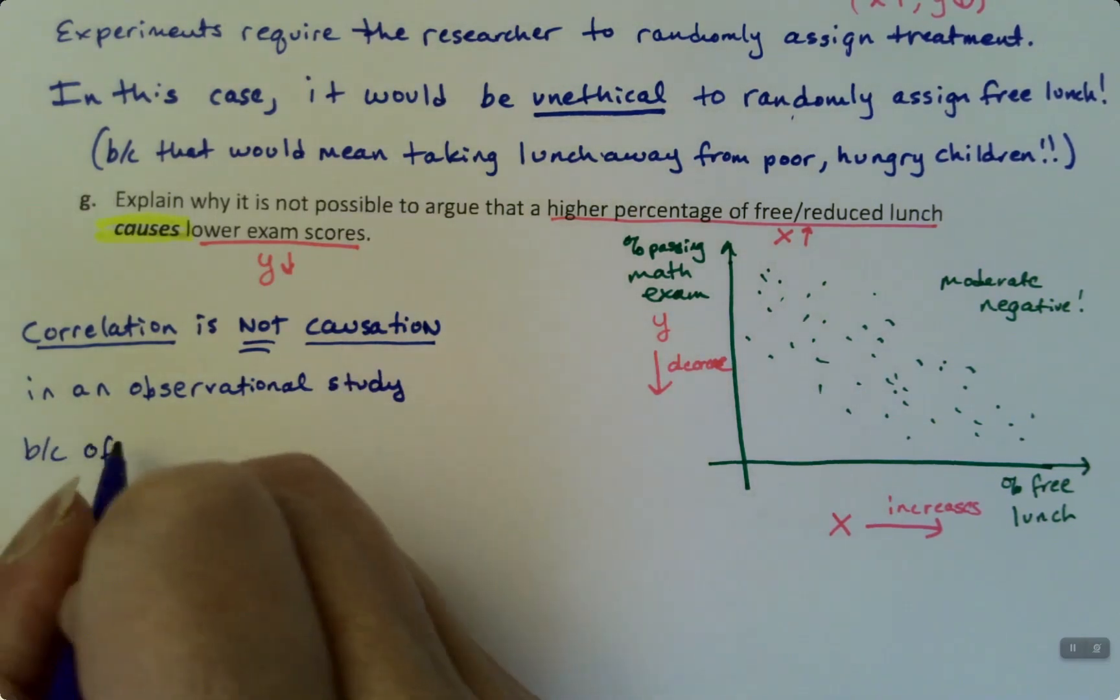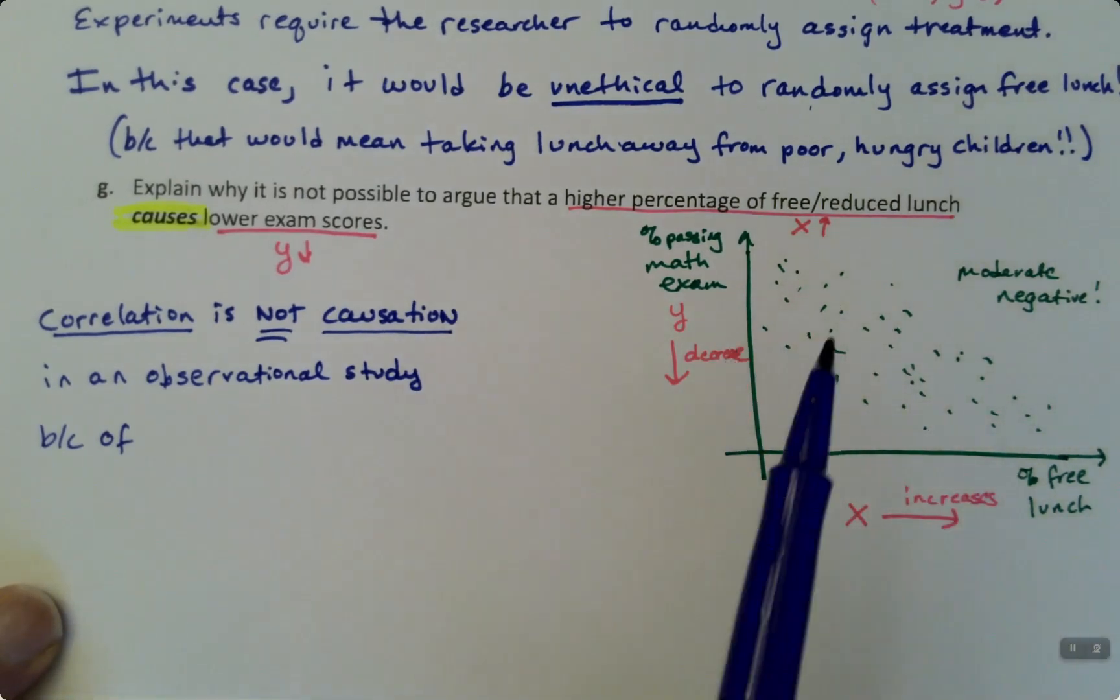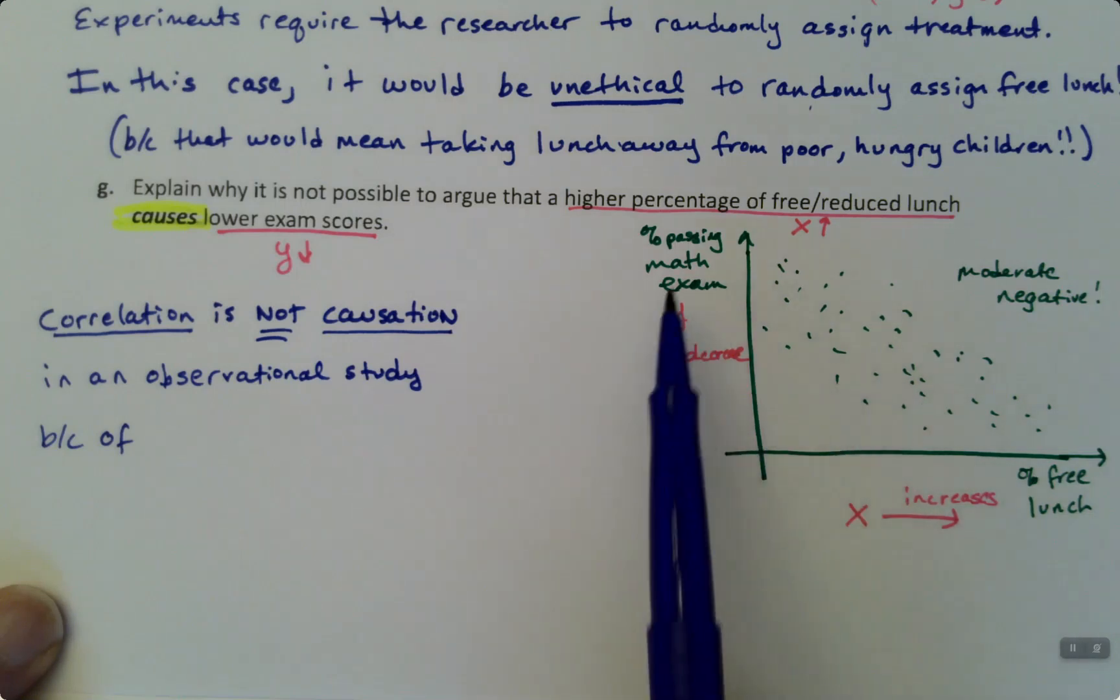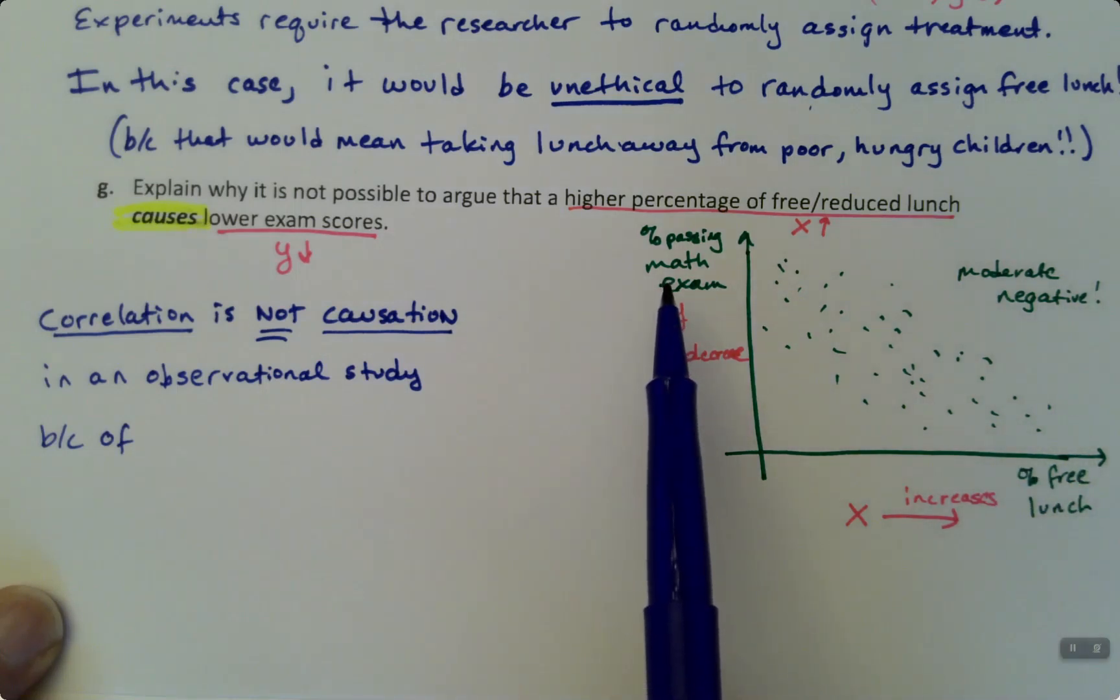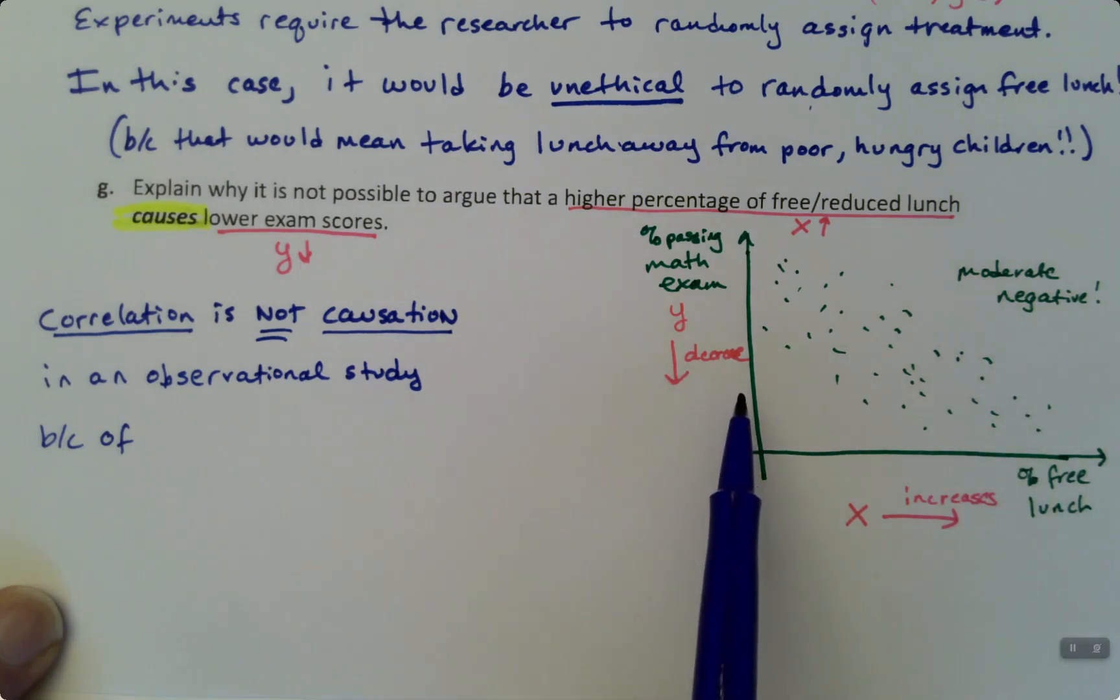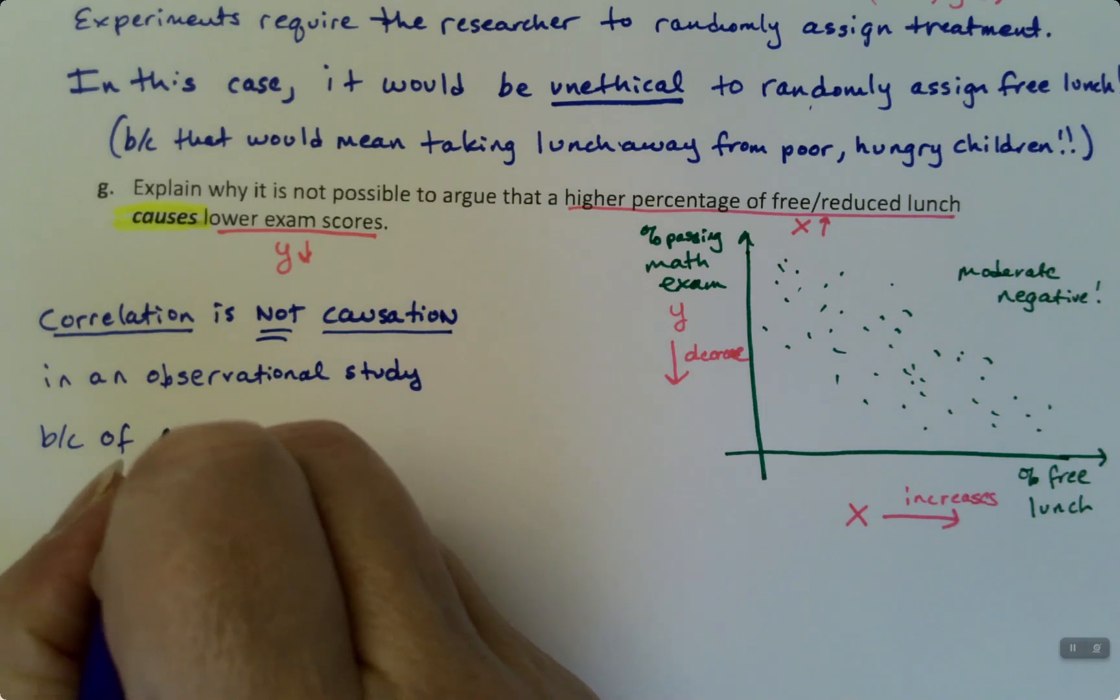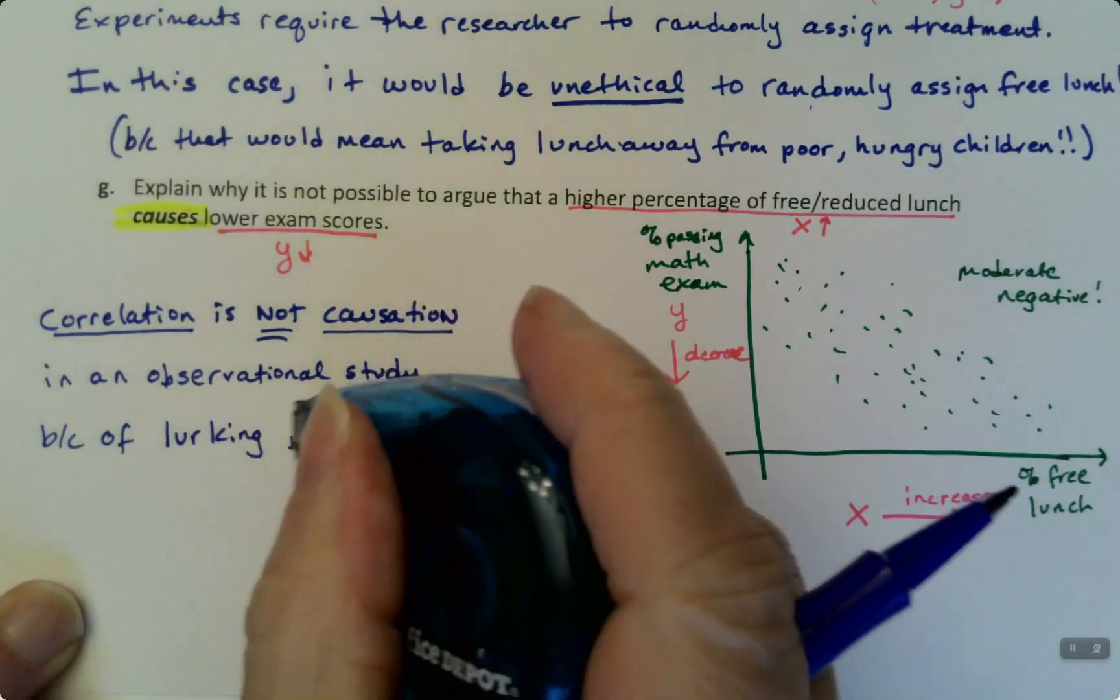Because why do your teachers always say that? Your math and science teachers, correlation is not causation. What they're talking about is, take this real life context. There is a relationship between the percentage of kids at a school that are on free reduced lunch and the percent that pass the math exam. If you all of a sudden took that school, take a school that's right over here and you just say nope, no free lunch for anybody anymore, we're going to move them way over here, that won't mean that they automatically pass their math test. Because there's other things going on, they're called lurking variables.